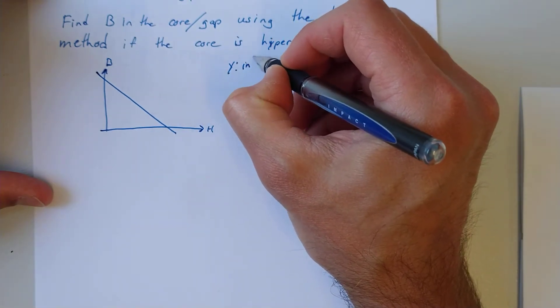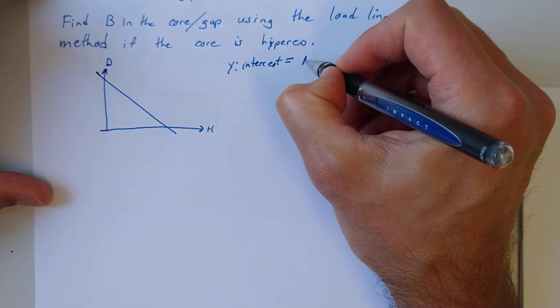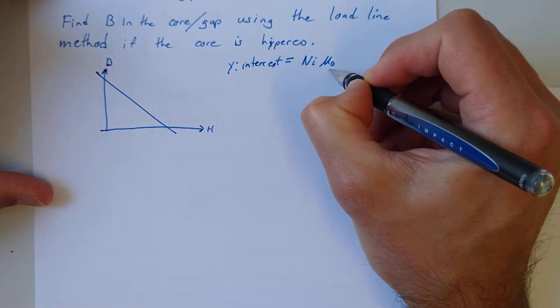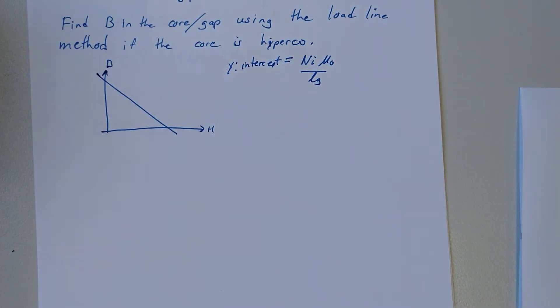The y-intercept is given by n*i*μ₀ over the length of the gap, and it's the magnetic field if the core had zero reluctance.